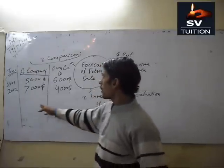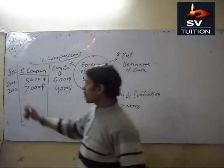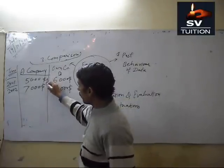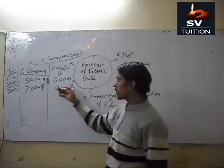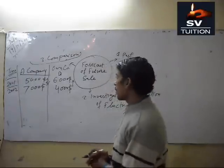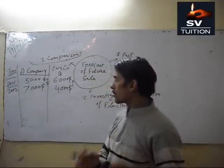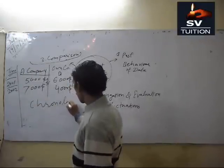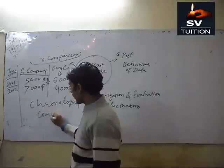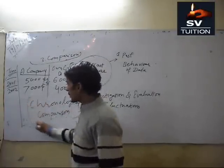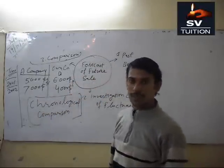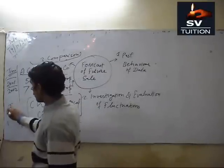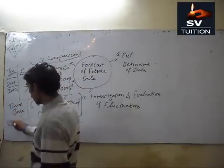We can compare our company with Company A on the basis of time — 2001 and 2002. Company A has an increasing trend, going from $5000 to $7000, while our trend is decreasing, going from $6000 to $4000. This is called chronological comparison, which is helpful for forecasting future sales. Chronological means time-based analysis and comparison.